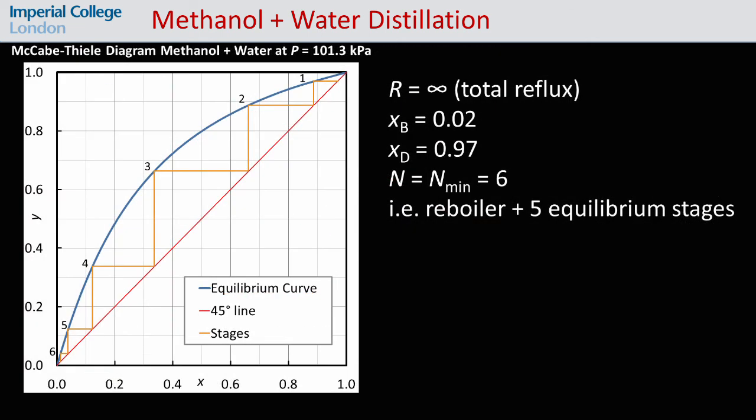Here we see the McCabe-Thiel construction for conditions of total reflux with the measured bottoms and distillate compositions. A total of six equilibrium stages are required, that is, five stages in addition to an equilibrium reboiler.